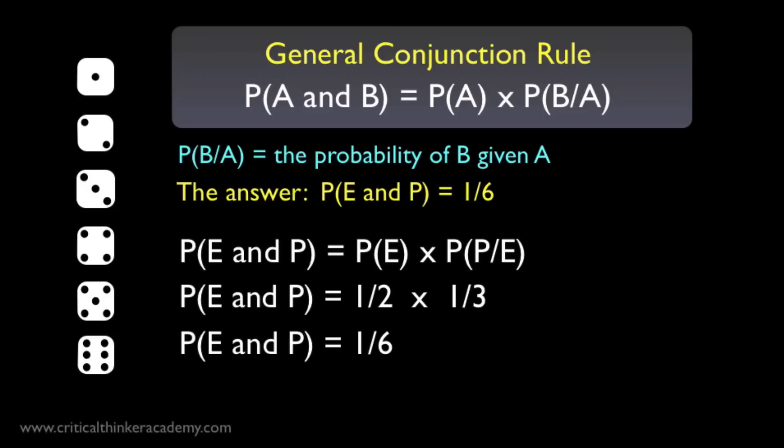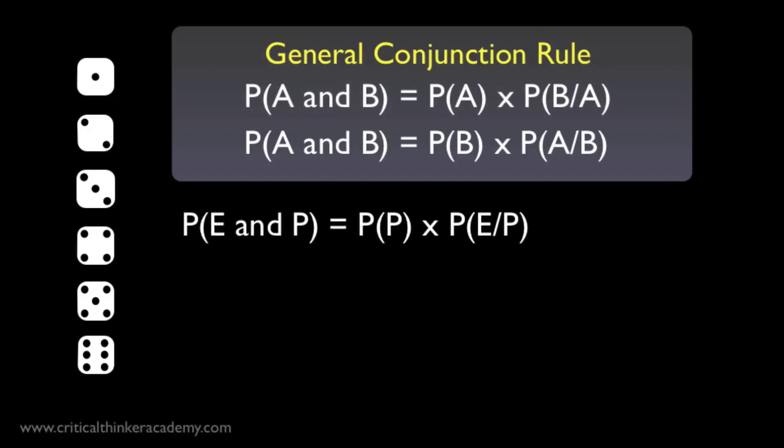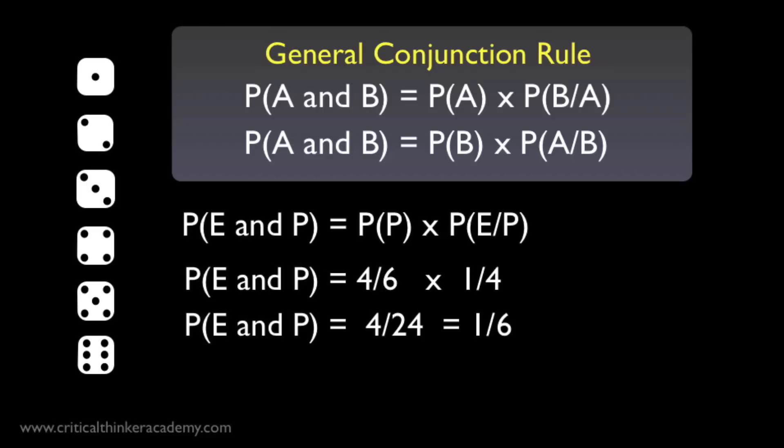You might be wondering whether it also works the other way, if we consider the probability of a roll being even given that it's prime. The answer is yes it does. If we switch around the A's and B's in our general rule, the result still holds. We've written the rule for this example in terms of E given P rather than P given E. The probability of a prime roll is 4 in 6, since 1, 2, 3, and 5 are primes. The probability of a roll being even, given that it's prime, is 1 in 4 — since of those 4 primes, only 1, the 2, is even. 4 over 6 times 1 over 4 is 4 over 24, which is 1 over 6. Same result — it works both ways.